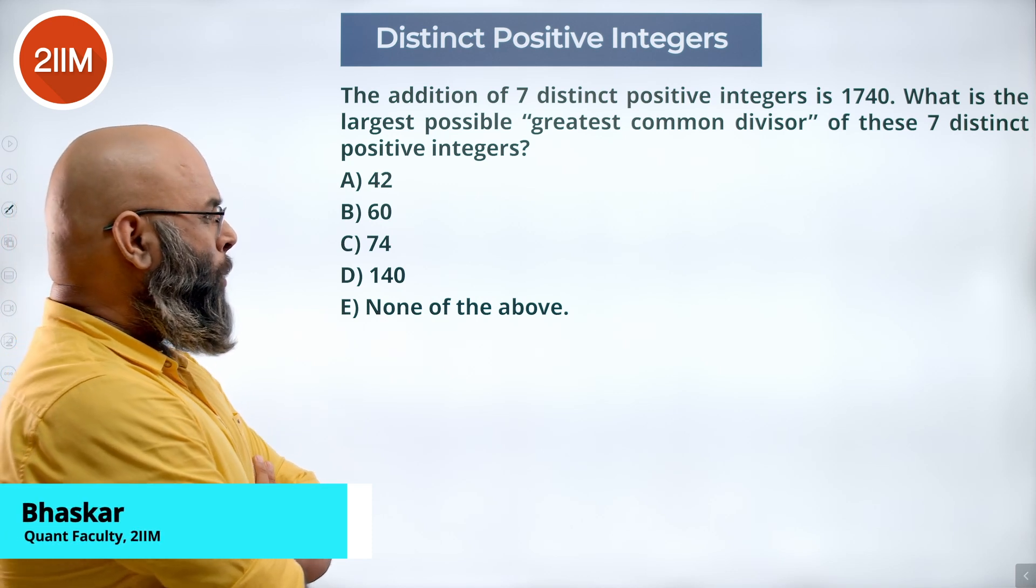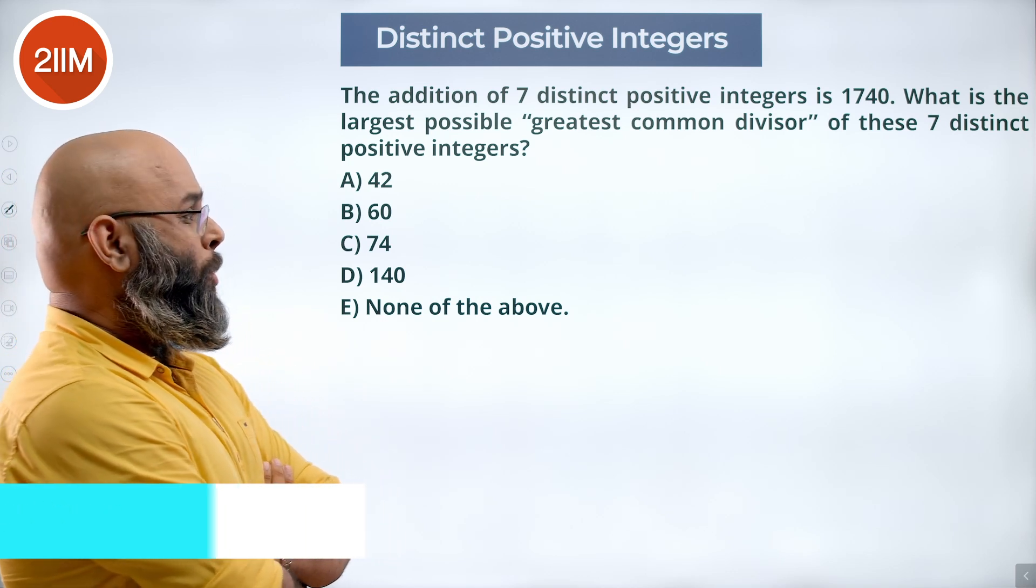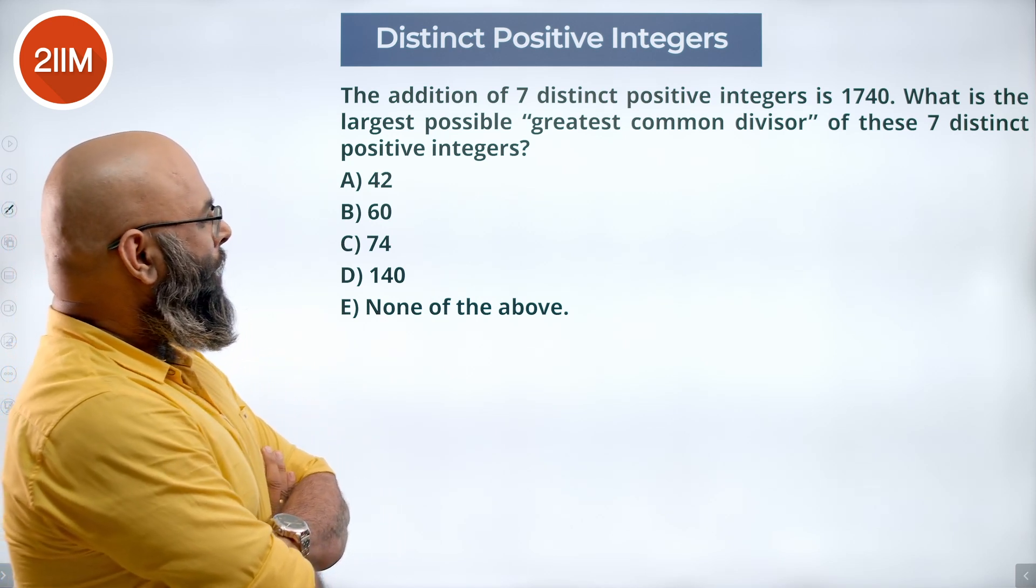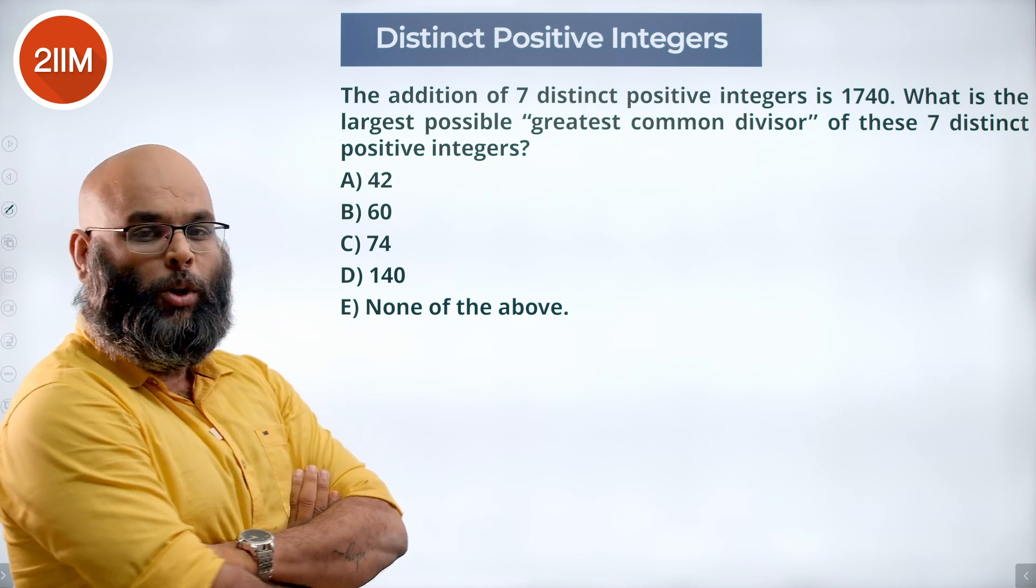The addition of 7 distinct positive integers is 1740. What is the largest possible greatest common divisor of these 7 distinct positive integers?